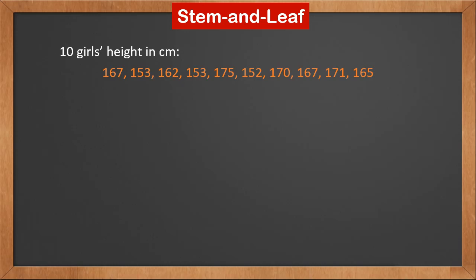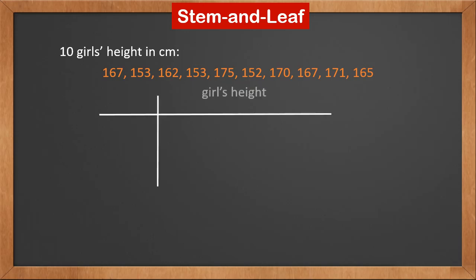Let's take a look at how to draw a stem and leaf diagram with the given data. These are the heights of 10 girls in centimeters. Let's first draw two lines and put in the title: Girls' Height.